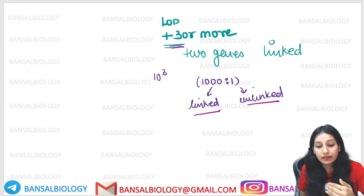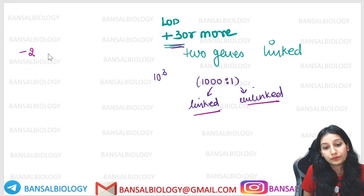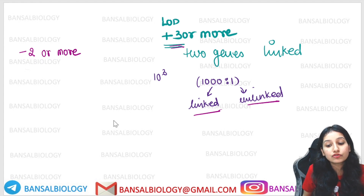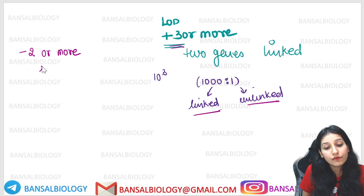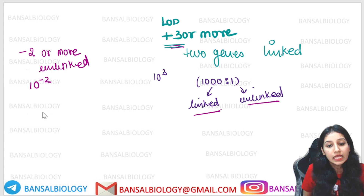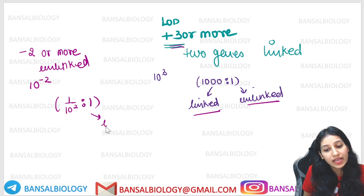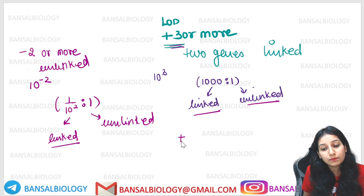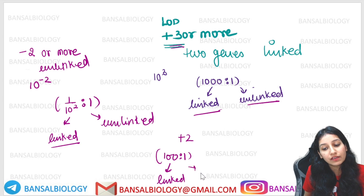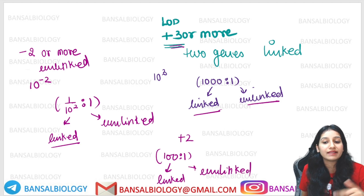So if the LOD score is plus 3, it means the genes are linked. If it is minus 2 or more negative — minus 2, minus 3, minus 4, minus 5 — it means the genes are unlinked. Minus 2 means 10 to the power minus 2, which is 1 by 100, so there is only a 1 in 100 chance they are linked. If it is plus 2, that means a 100 to 1 ratio in favor of being linked.